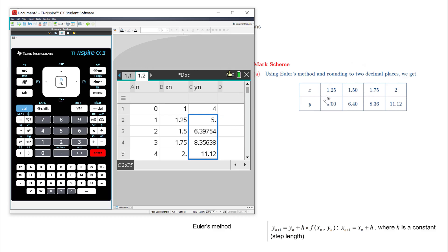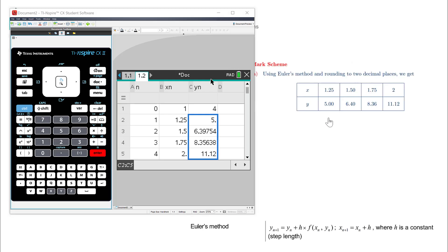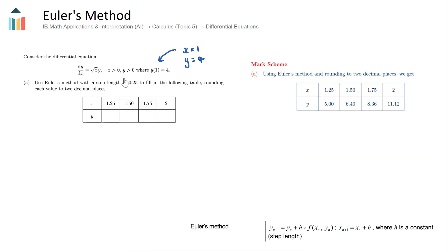We've now found the y values at each x value — these are the coordinates for our solution curve. In a typical exam question they might ask for the y value when x equals 2, and the answer is approximately 11.12. This is our numerical solution to the differential equation. I recommend practicing a few more examples, but your calculator steps will be the same as what we just went through. Good luck!